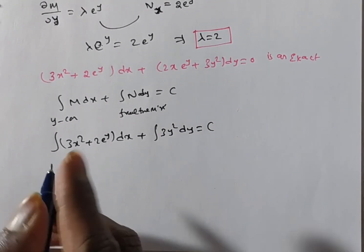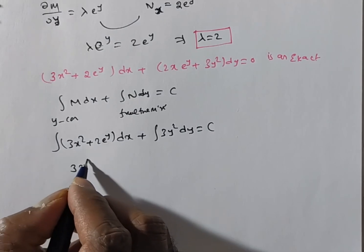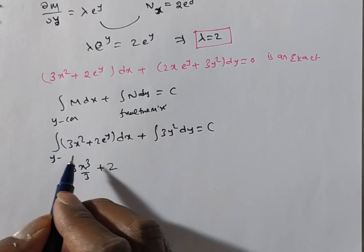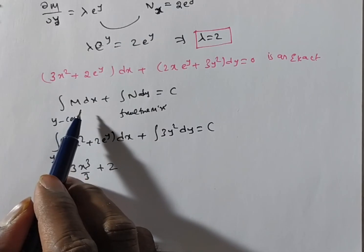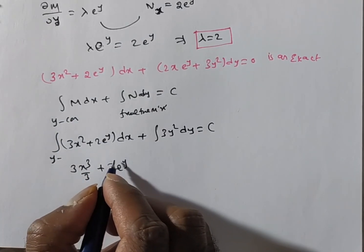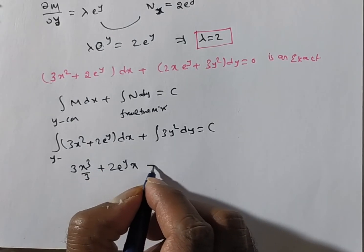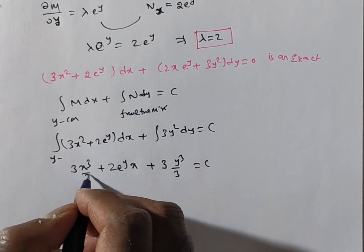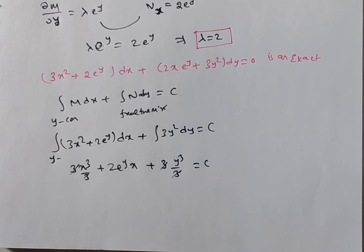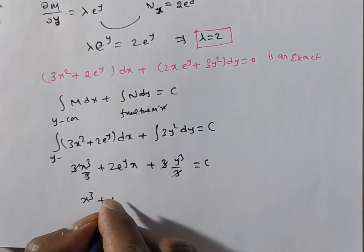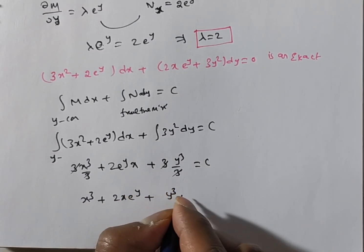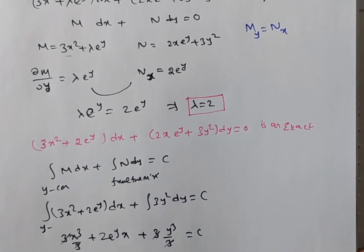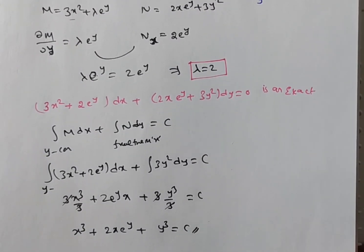Integrating: ∫3x² dx = x³, and 2e^y is a constant with respect to x so gives 2x·e^y. Then ∫3y² dy = y³ (the 3s cancel). The final solution is x³ + 2x·e^y + y³ = C. In this problem, we found lambda = 2 and obtained the general solution.